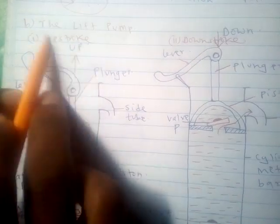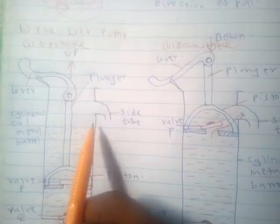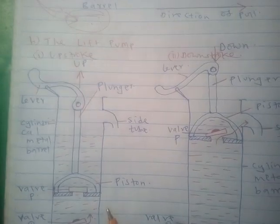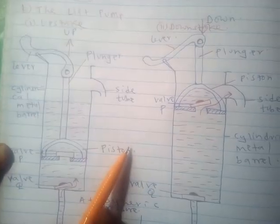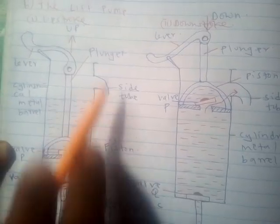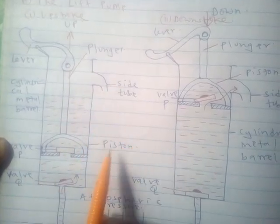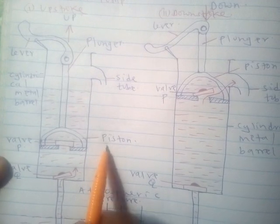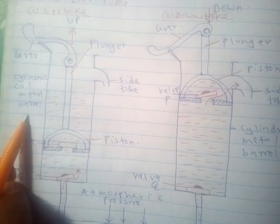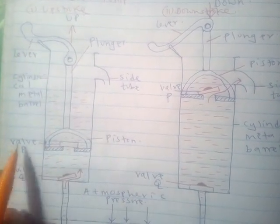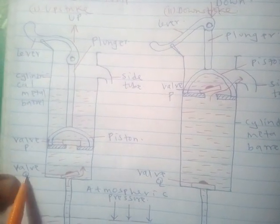The second application is the working of the lift pump. A lift pump is used to raise water from a well. Its parts include the plunger, the side tube, the piston, the cylindrical metal barrel, the lever, valve P, and valve Q.